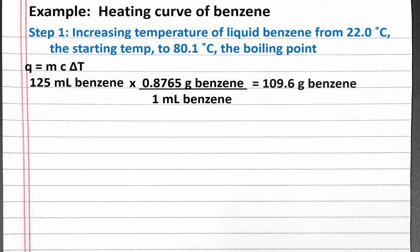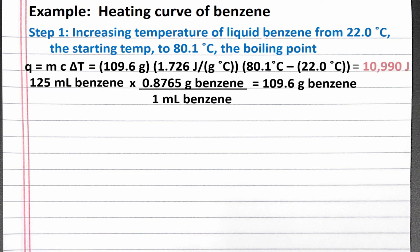We should have 109.6 grams benzene. Then we can plug our mass, specific heat capacity, and change in temperature into our equation. Completing the calculation, we should get 10,990 joules.